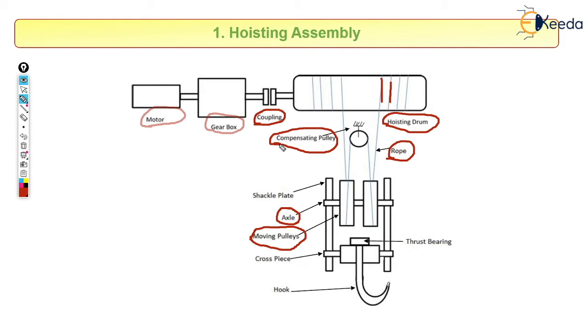These two pulleys are placed on the axle and this axle is mounted on a shackle plate. At the other end of shackle plate we have one more thing, that is a cross space part.